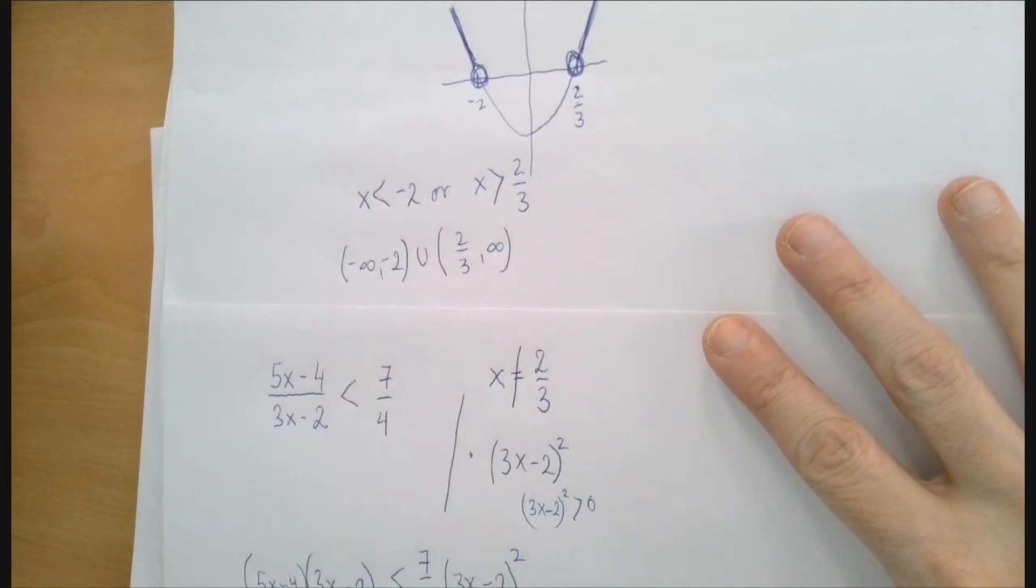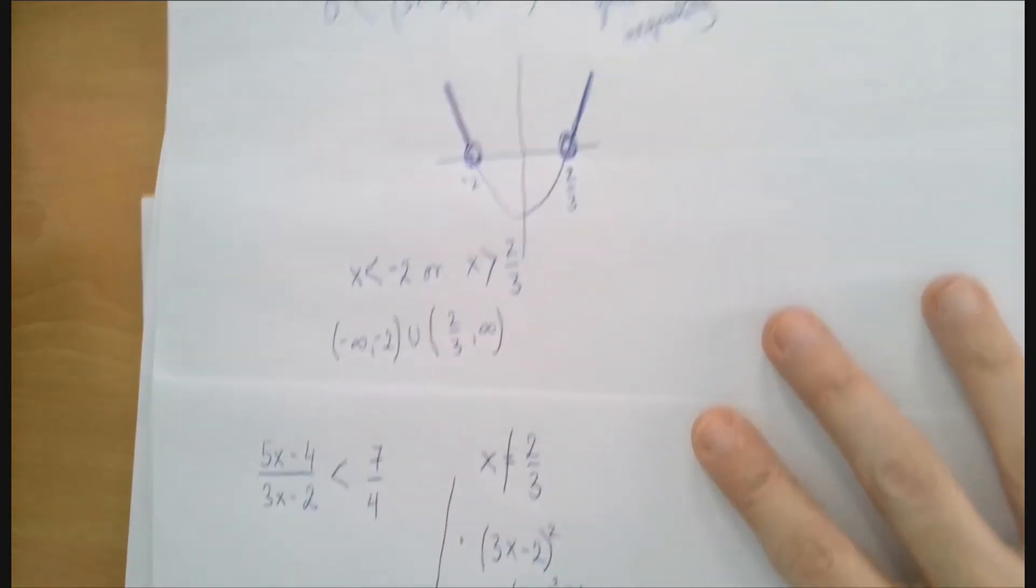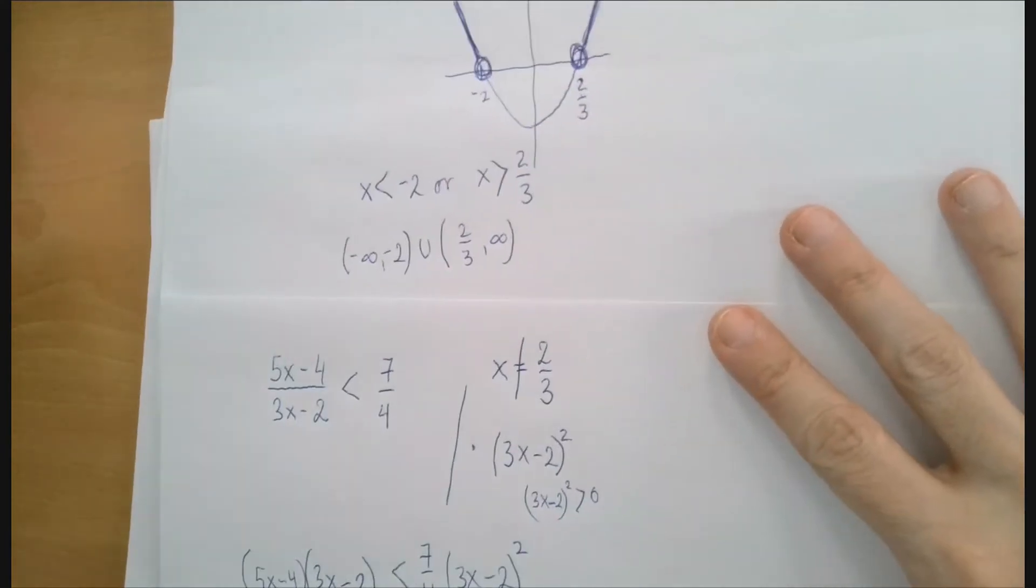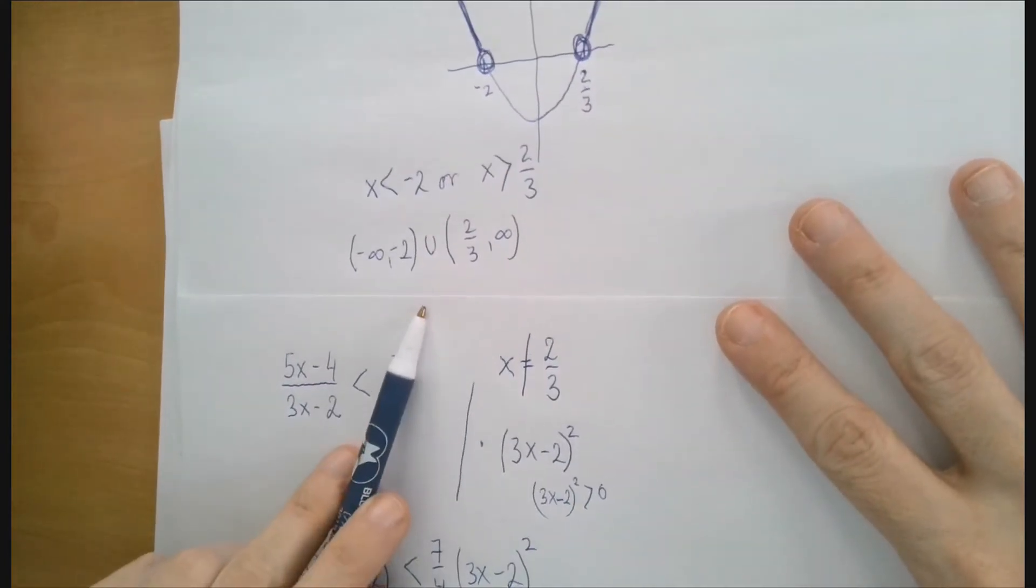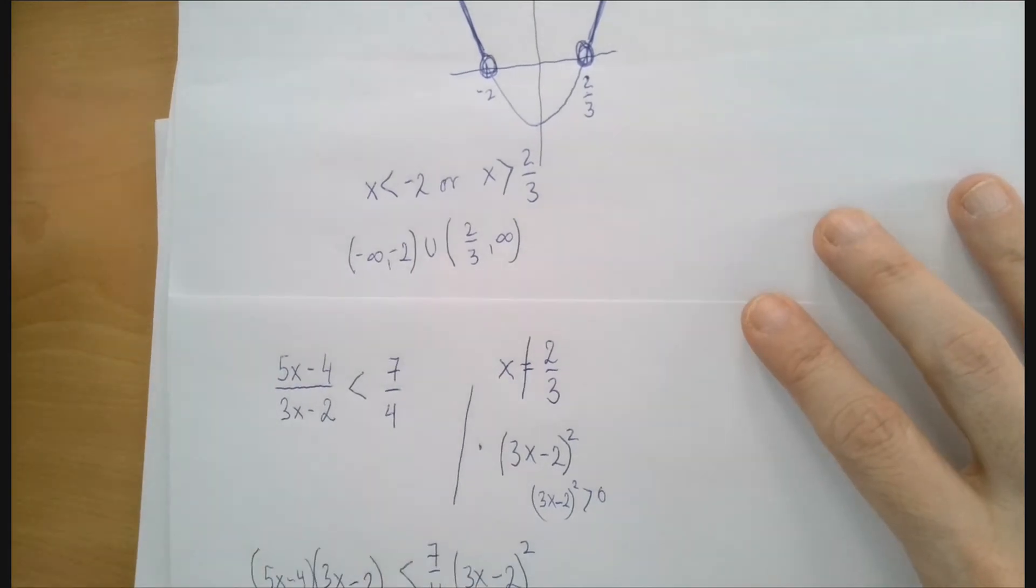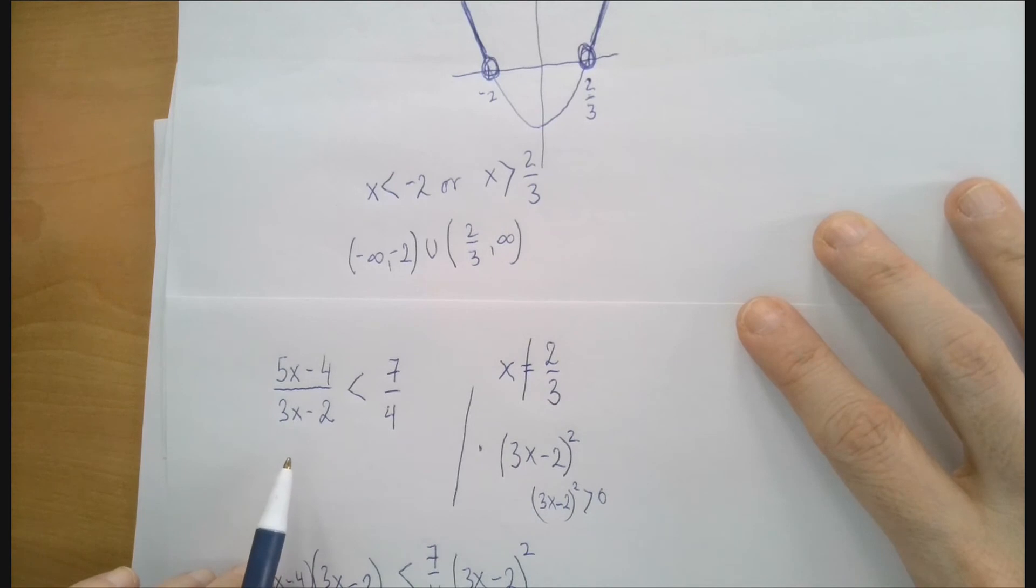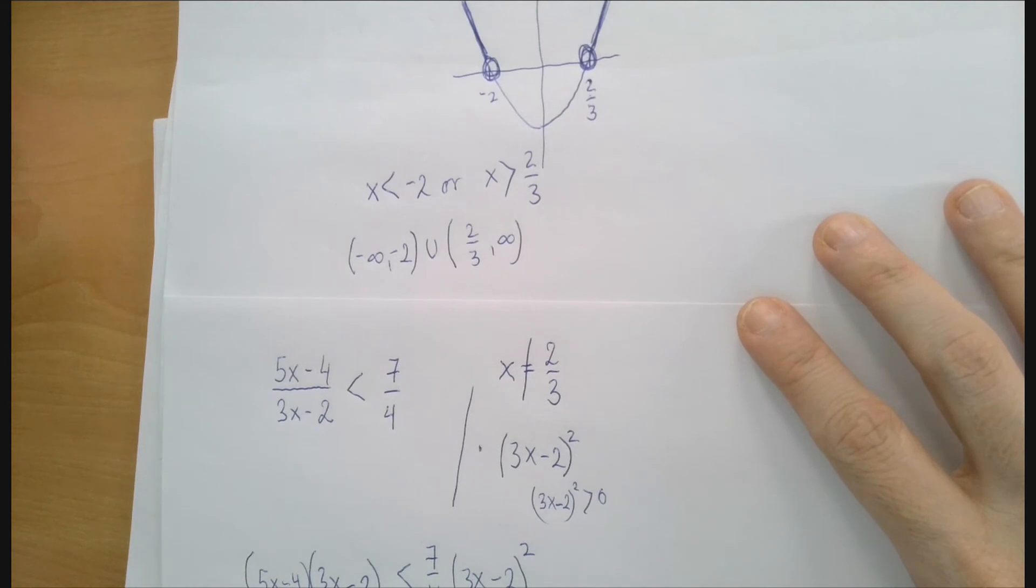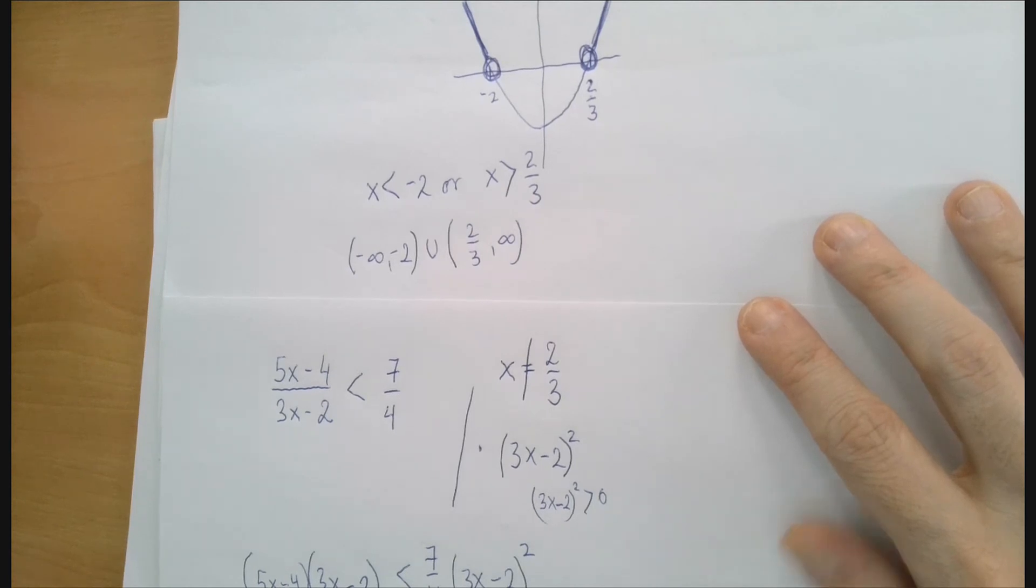We can also check a number inside our solution set. For example, x is greater than 2 thirds, let's do x equals 1. If we put x equals 1 into the left hand side, we get 1, or 4 over 4, and that is less than 7 over 4, and so on. So we can check inside an inequality, we can check the boundary of the inequality. So if you have the time, you should definitely check. Thank you for watching.